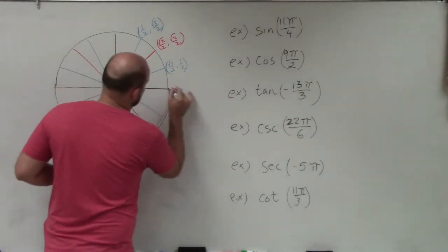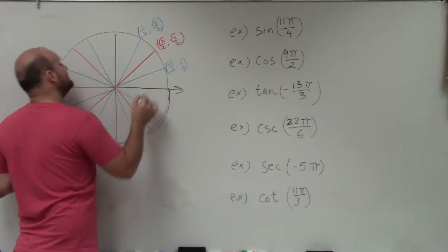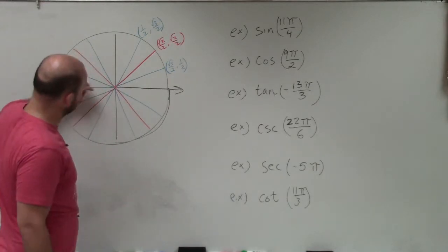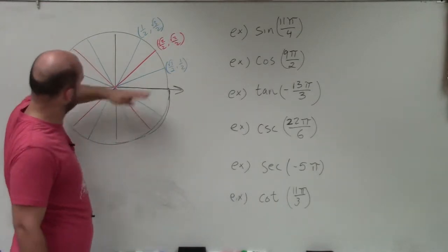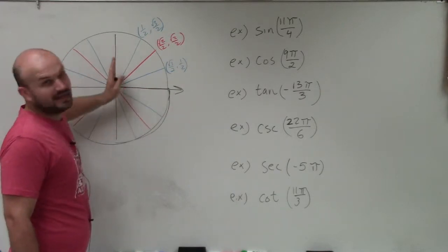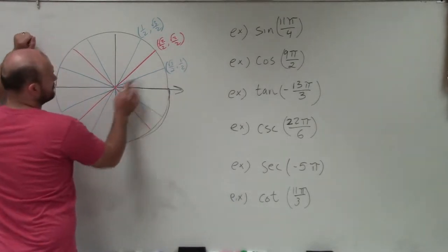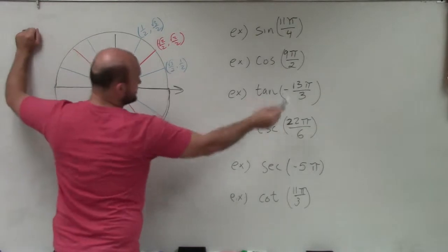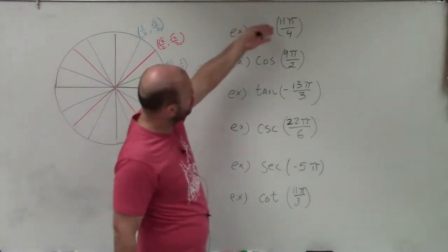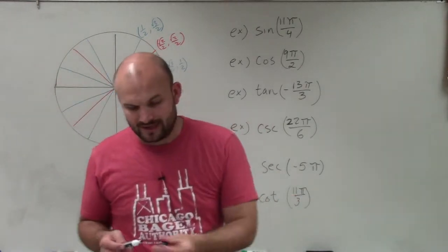Remember, we always start at our initial side, and all of these angles are larger than one revolution around. I drew the unit circle broken into sections: the black lines divide it into halves, which helps with problem two; the blue lines divide it into sixths, which helps with thirds and sixths; and the red lines divide it into fourths — one fourth, two fourths, three fourths, four fourths. I broke it up that way to help us along.